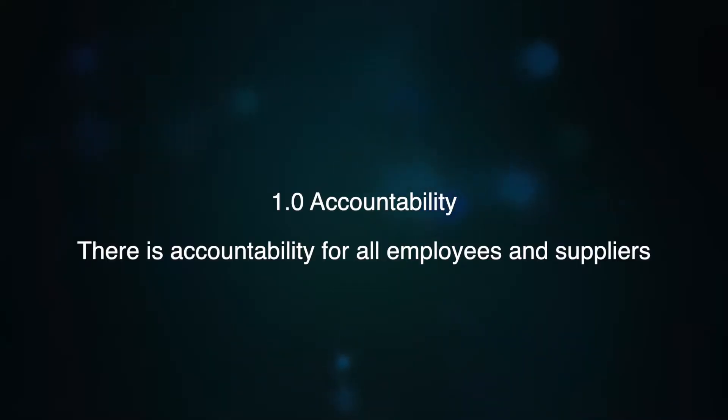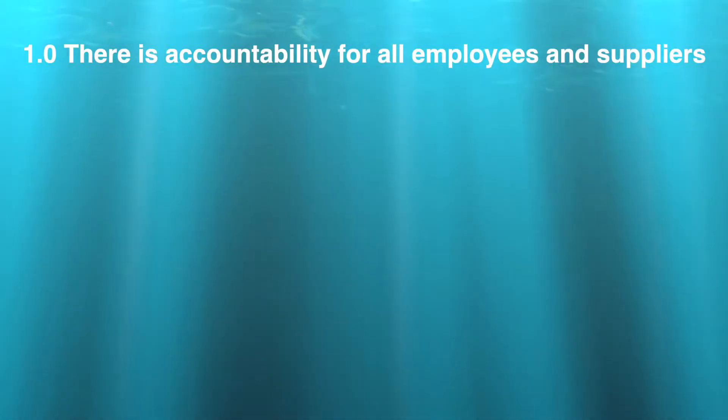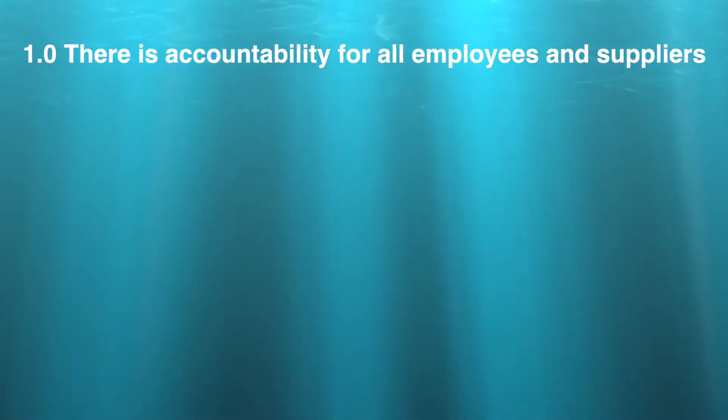1.0 Accountability. There is accountability for all employees and suppliers. Within this accountability chapter we're going to go through the five key things that managers and leaders must do to ensure that they're able to execute on the accountability role effectively.